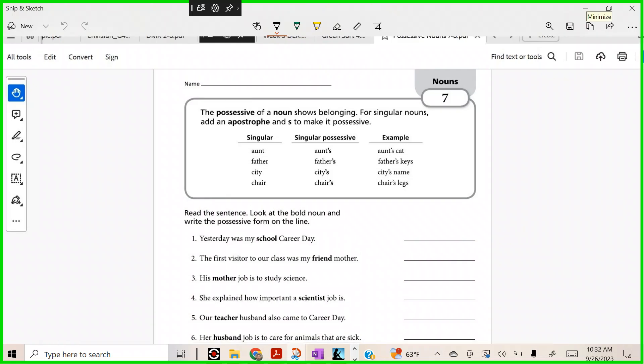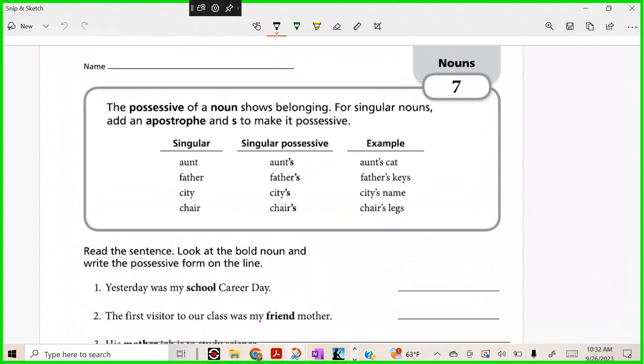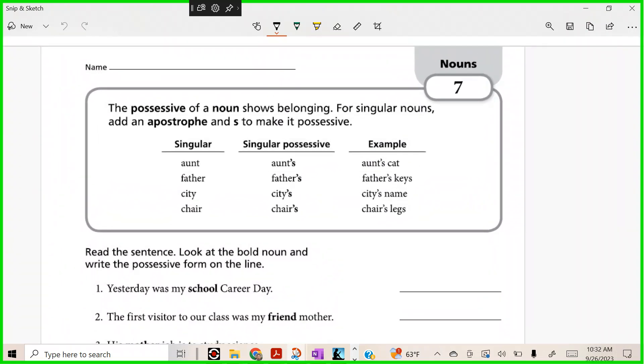How possessive nouns work - we were just discussing how possessive nouns show belonging or show that someone has ownership of something. So we're going to talk about singular nouns and apostrophe s.